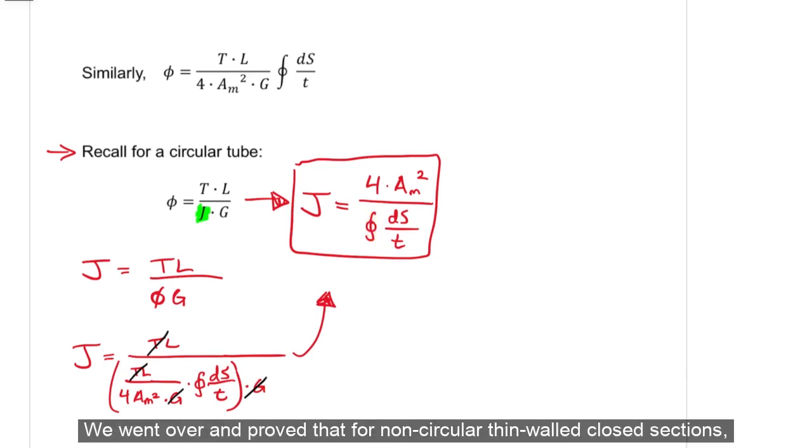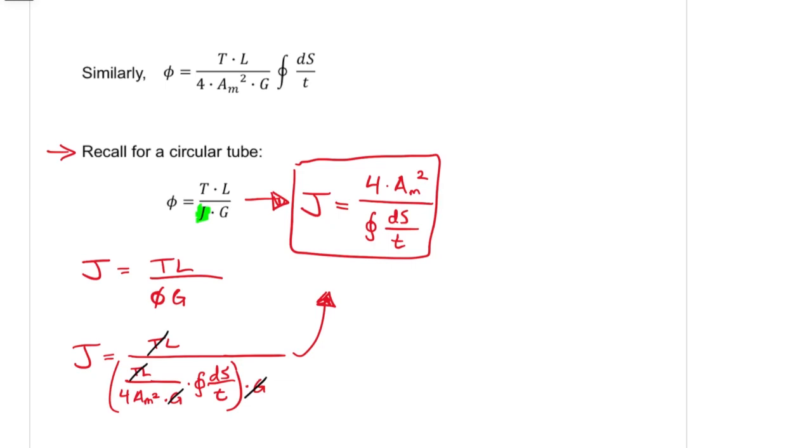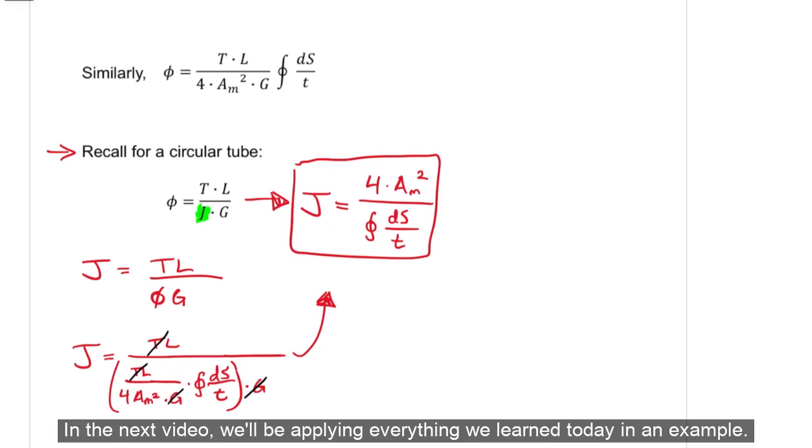That concludes everything you need to know for torsion in thin walled closed sections. We went over and proved that for non-circular thin walled closed sections, the average shear stress is uniform throughout the thickness of the shape, which means that shear flow is constant along the thin section. We also derived an average shear stress equation, shear flow equation, as well as an angle of twist equation for thin walled closed sections. In the next video, we'll be applying everything we learned today in an example.